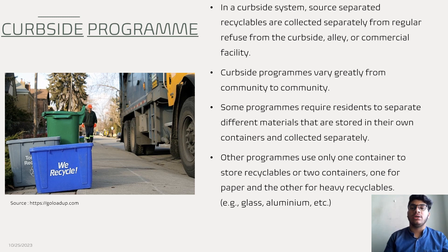The next element is the curbside program, which is very important. In a curbside system, source-separated recyclables are collected separately from regular refuse from the curbside area or commercial facility. Curbside programs vary greatly from community to community. Some programs require residents to separate different materials stored in their own containers and collected separately. Other programs use only one container, or two — one for paper and the other for remaining recyclables like glass, aluminium, etc.